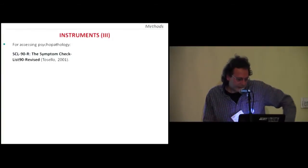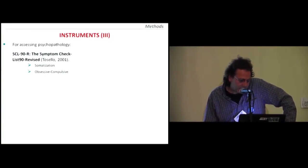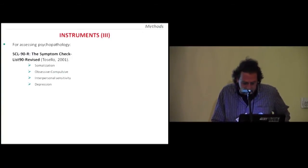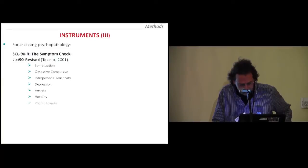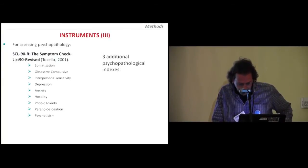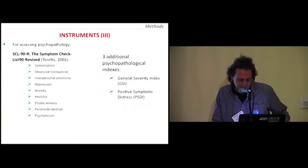One classical psychopathological test that has different dimensions: somatization, obsessive-compulsive, interpersonal sensitivity, depression, anxiety, hostility, phobic anxiety, paranoid ideation, psychoticism, and it reports a total score and additional psychopathological indexes.